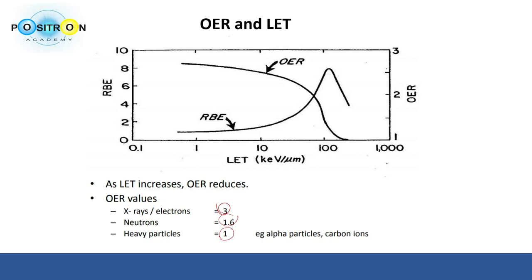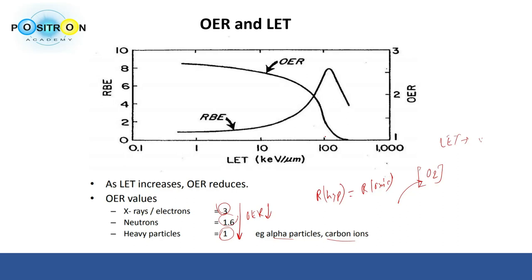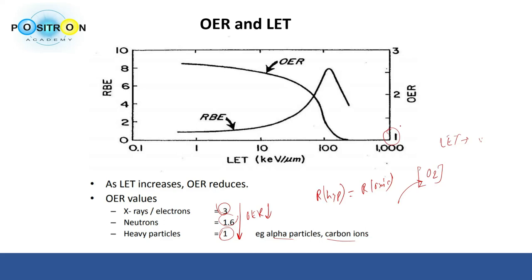When OER equals 1, the radiation dose in hypoxia equals the radiation dose in oxic conditions. This means that if a tumor is treated with alpha particles or carbon ions, the oxygen concentration is irrelevant — cell killing is the same regardless of whether the tumor is oxic or hypoxic. As LET increases beyond 100 keV/μm, OER drops to 1, confirming that dose in hypoxia equals dose in oxic conditions.